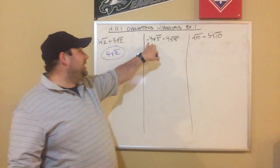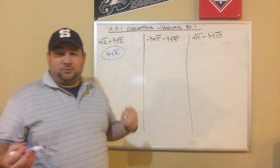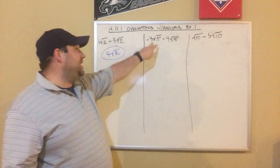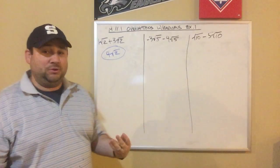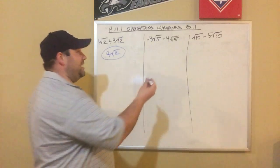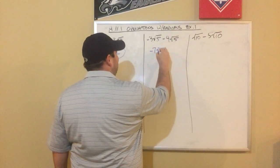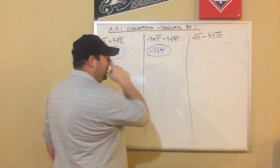So if I look at my next one: negative 3 root 5 minus 4 root 5. I have negative 3 root 5s minus 4 more root 5s. Negative 3 minus 4 is negative 7, so that's negative 7 root 5.